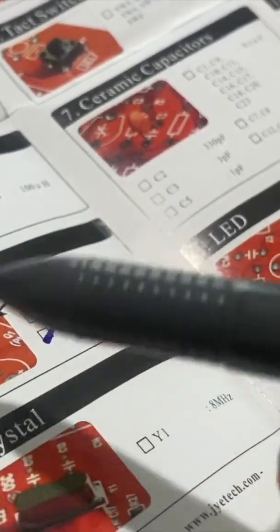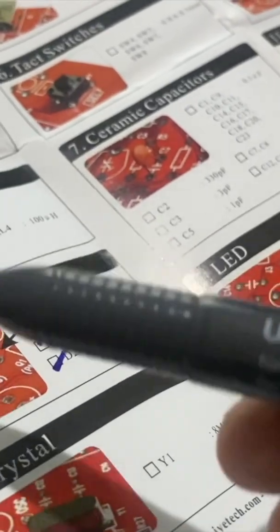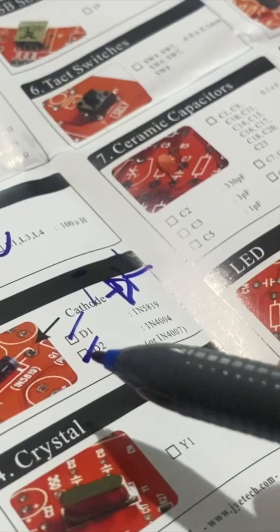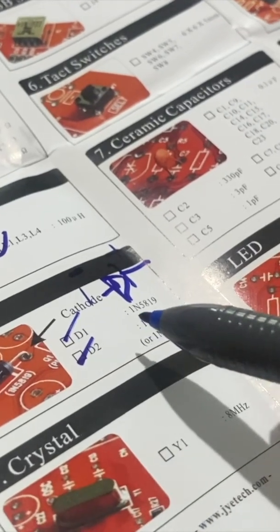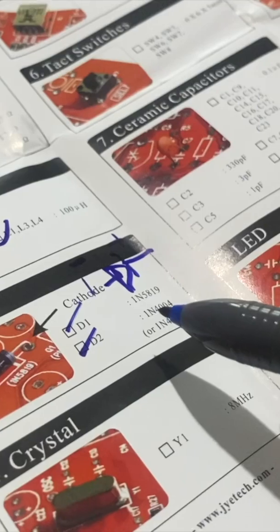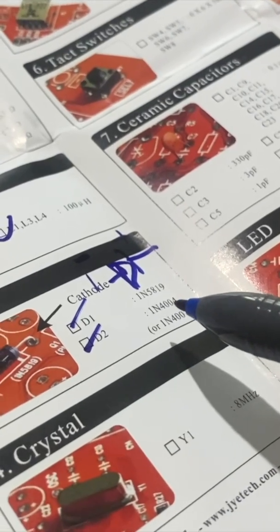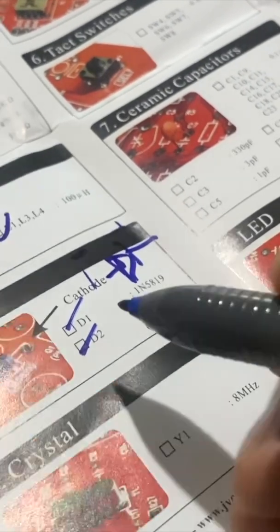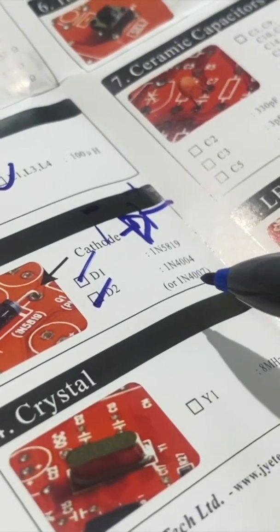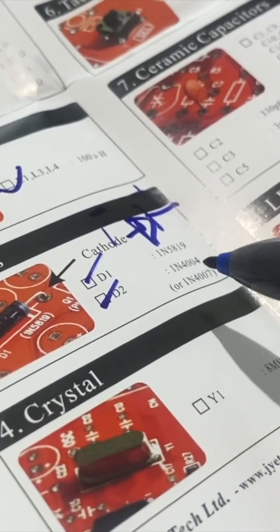Because the function of that is to allow current only in one direction. Another part of diode, it have codes. So D1 is 1N5819 and D2 is 1N84004. It's either this one in your package or it's this one 1N4007. Mine was 4007, so I didn't have this one. I used this one for D2.